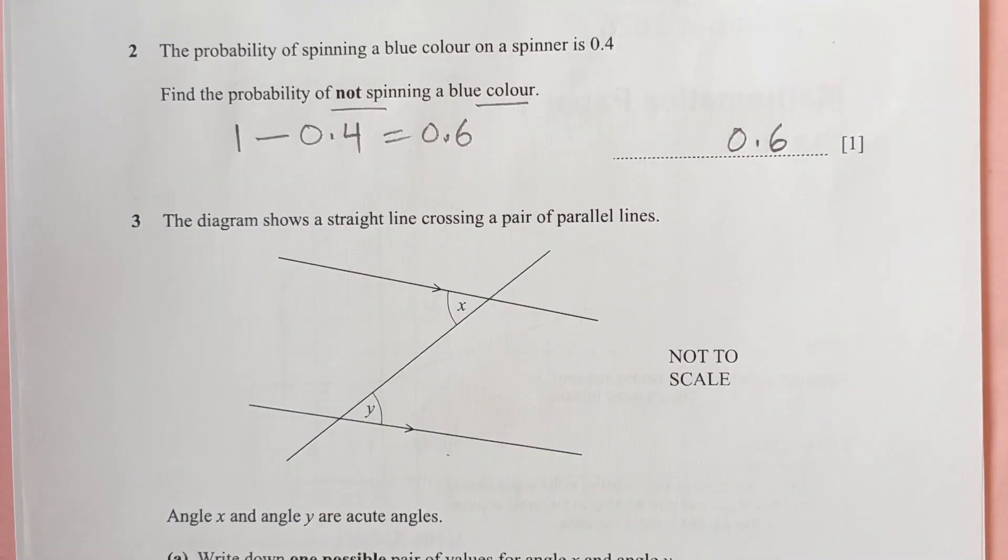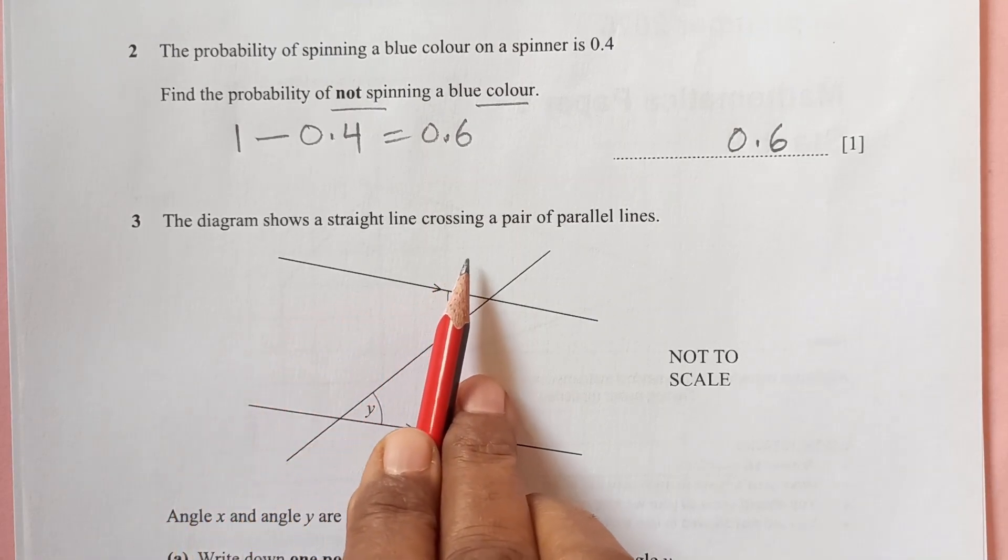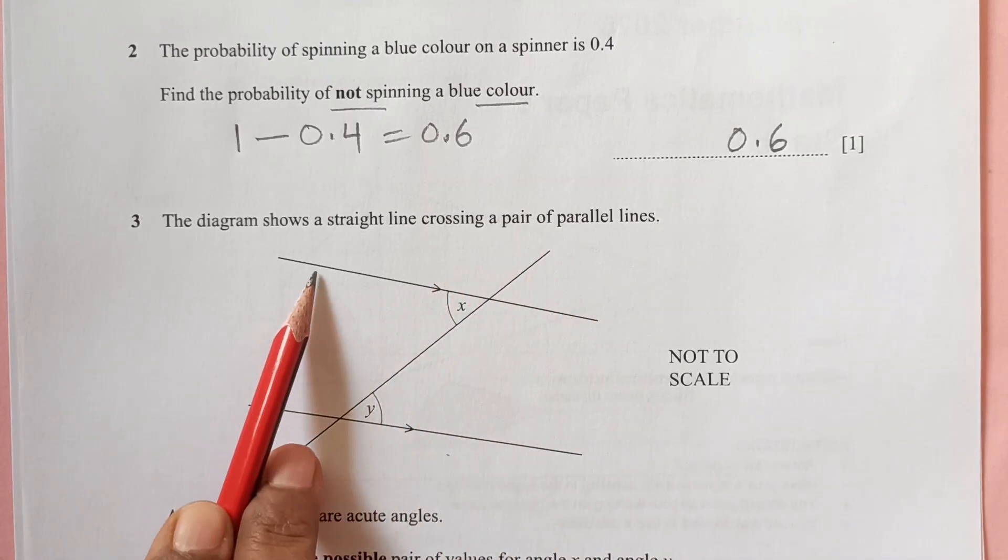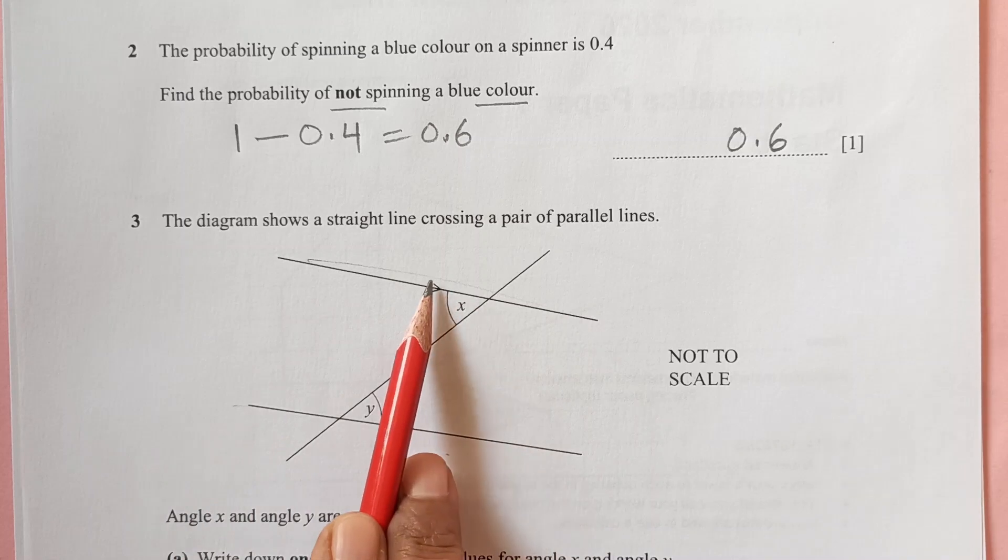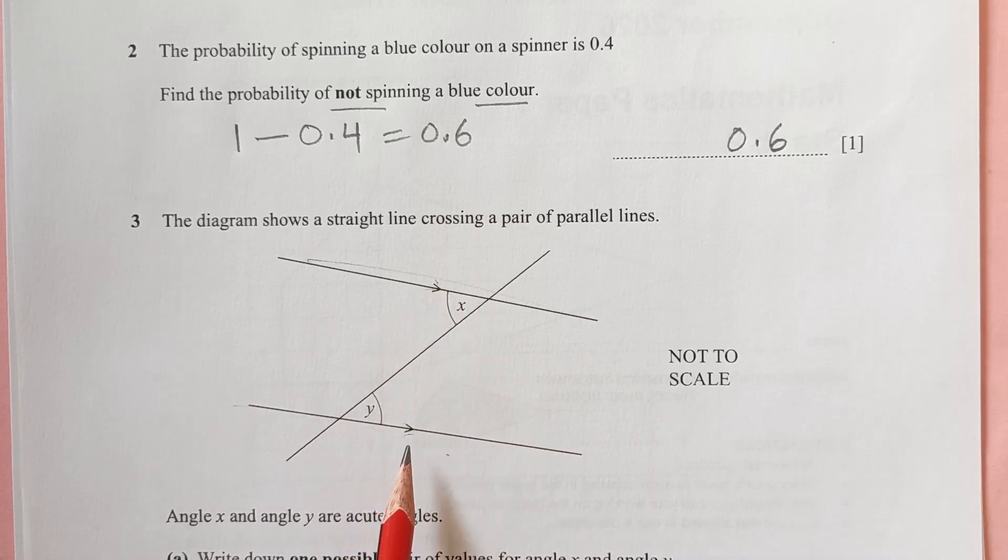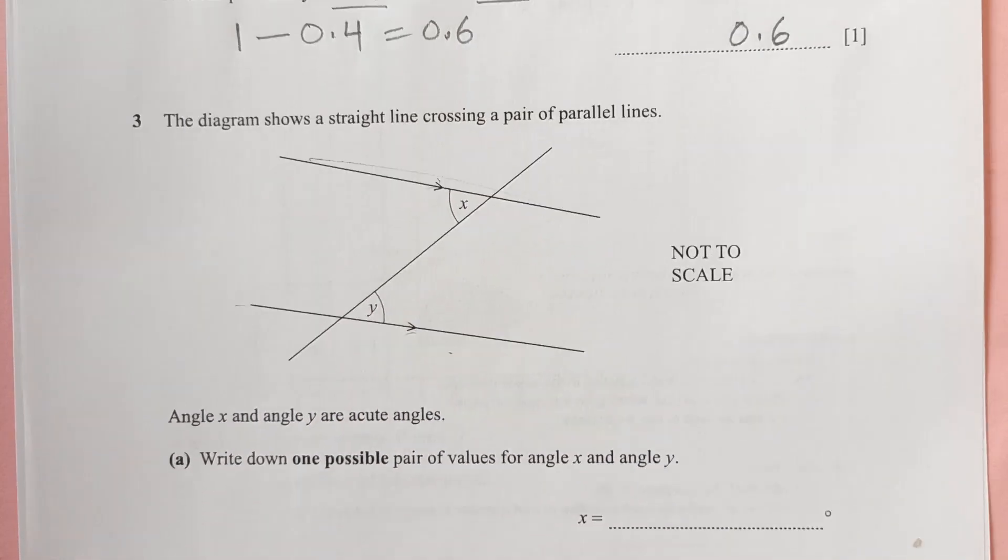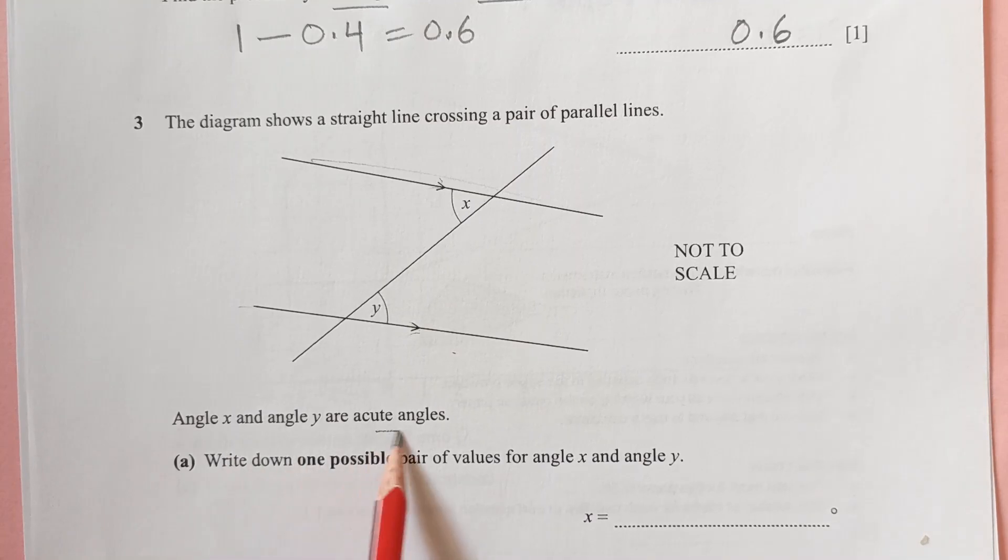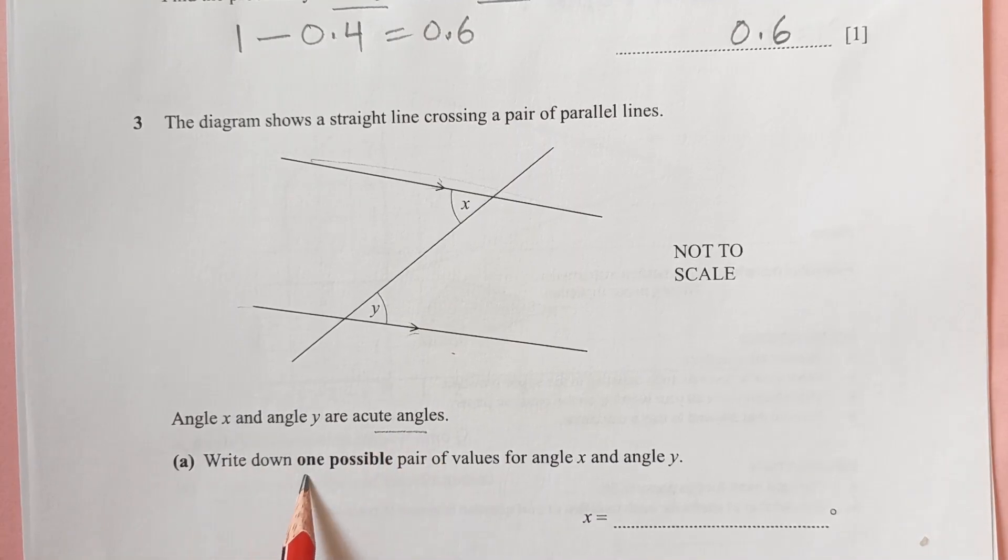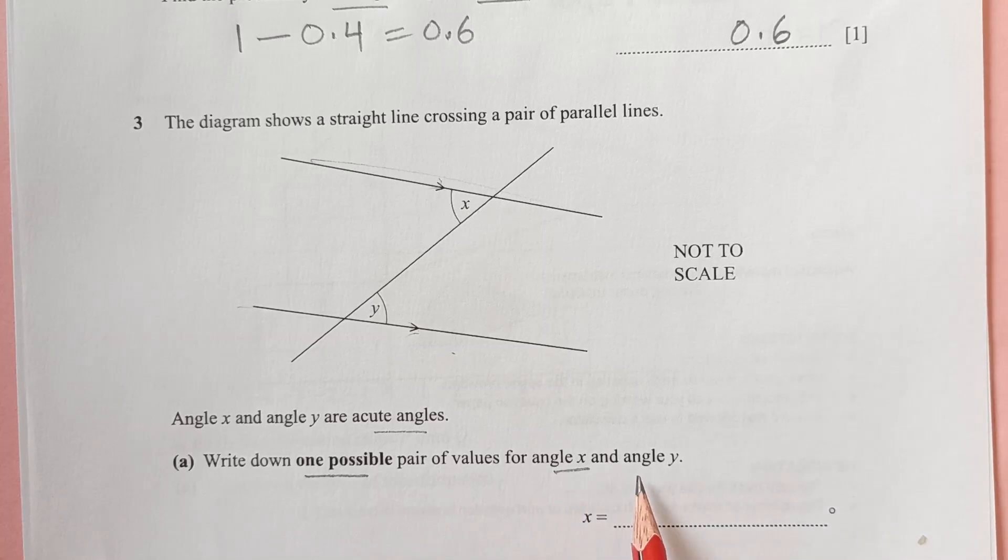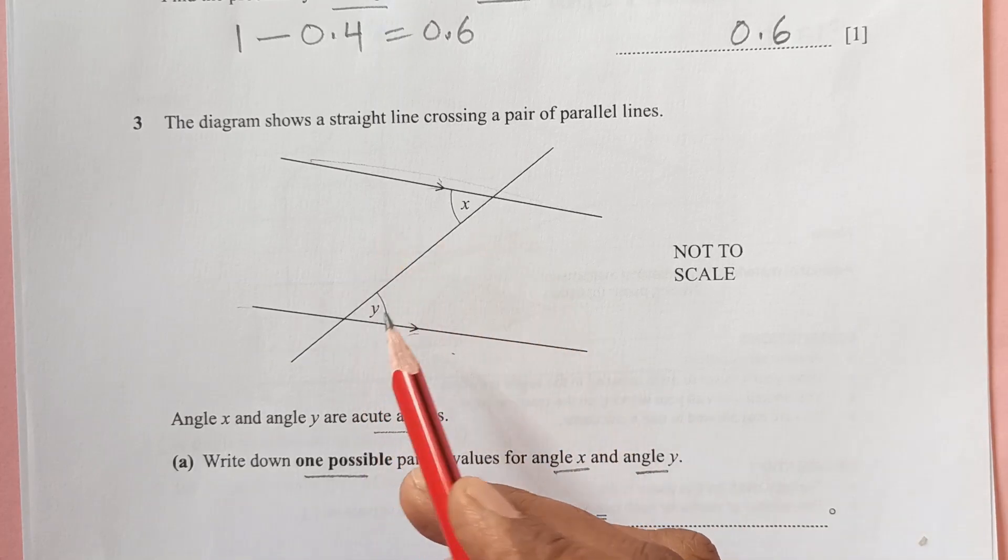Now the diagram shows a straight line crossing two pairs of parallel lines. You see this line and this line, these small arrows show that these two lines are parallel. Angle x and y are acute angles. Write down one possible pair of values for angle x and y.